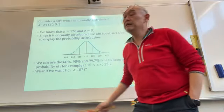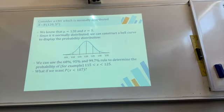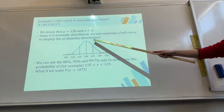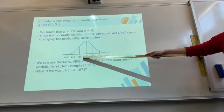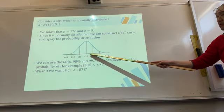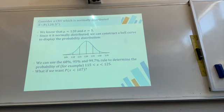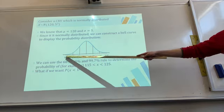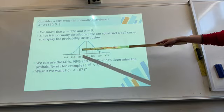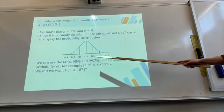Given a distribution with mean 120 and standard deviation 5, we construct a bell-shaped curve with the peak at 120. One, two, and three standard deviations are marked out. We can use the 68-95-99.7 rule to determine probability — for example, between 115 and 125.